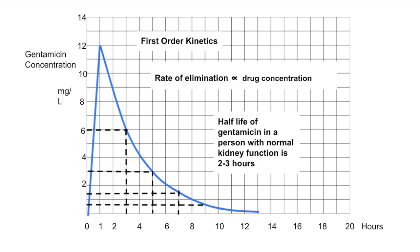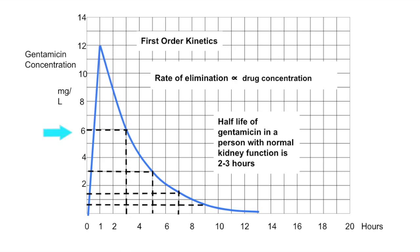The half-life of gentamicin in a person with normal kidney function is two to three hours. I've drawn it out here using a half-life of two hours, meaning every two hours the drug concentration goes down by half. In this example, the peak is at 12 mg/L; two hours later the concentration has gone down to 6 mg/L, and another two hours later it's gone down to 3 mg/L. The levels of gentamicin are almost zero by around hour 12, meaning almost all of it has been cleared from the body.